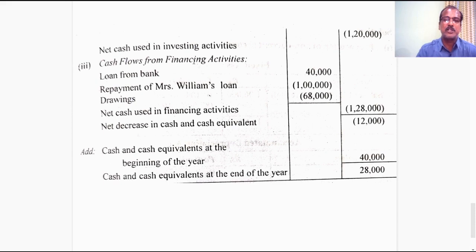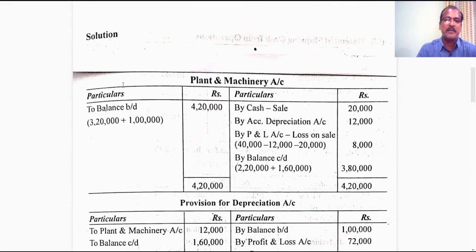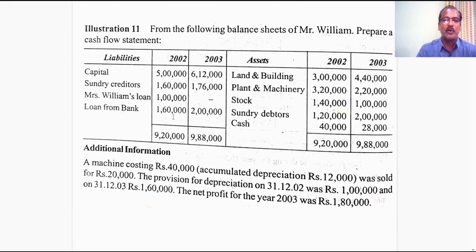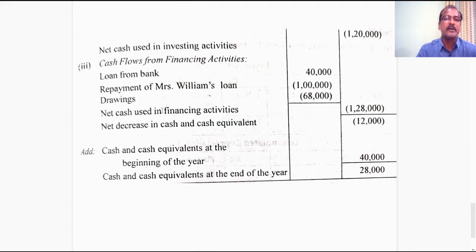Cash flows from financing activities: we additionally borrowed 40,000 rupees from the bank — cash inflow. Mrs. Williams' loan of 1 lakh rupees has been repaid — cash outflow. Drawings of 68,000 rupees — cash outflow through financing activities. These three items together give a net result of 1,28,000 cash used in financing activities.